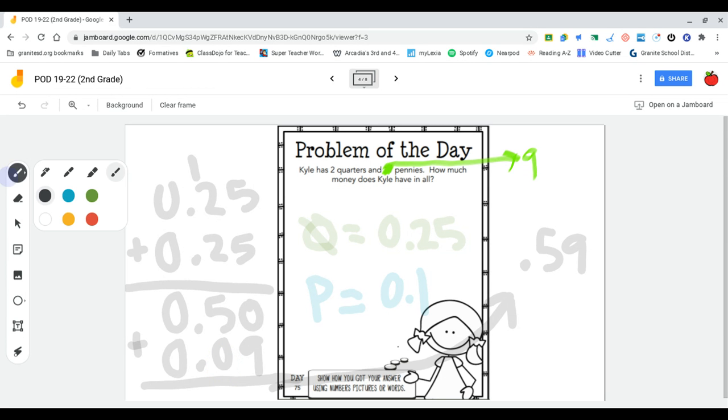I can write it like the way I just did, which is the decimal and then the five and the nine, or I can do zero decimal five nine. Both of those would be correct.